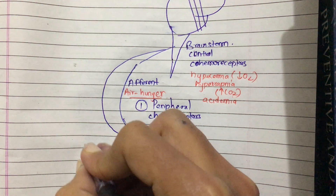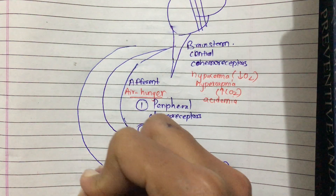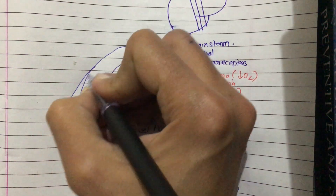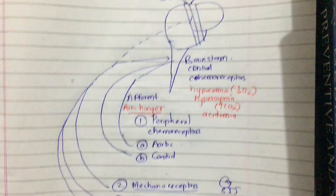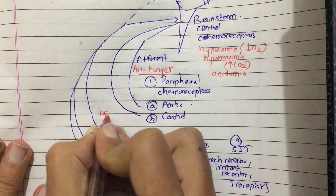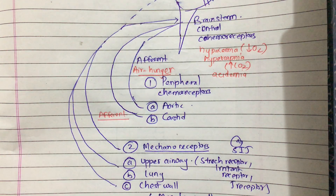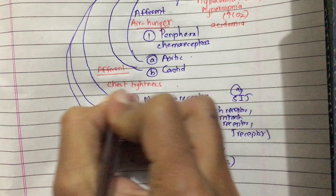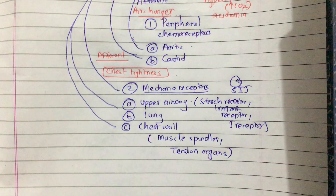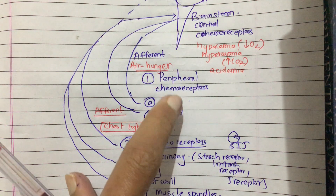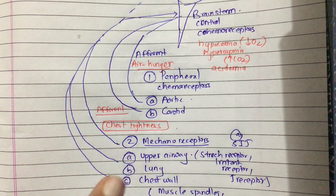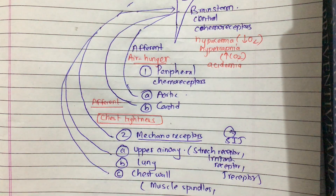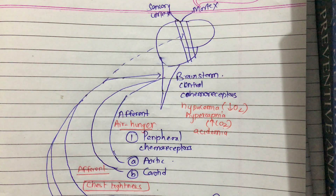These mechanoreceptors take afferent signals to the brainstem and also to the sensory cortex. These three types of mechanoreceptors — upper airway, lung, and chest wall — are mainly responsible for chest tightness. So air hunger is mediated by the peripheral chemoreceptors (aortic and carotid), while chest tightness is due to the mechanoreceptors.